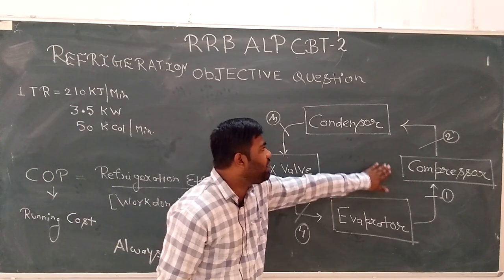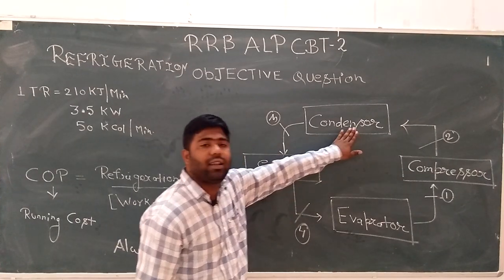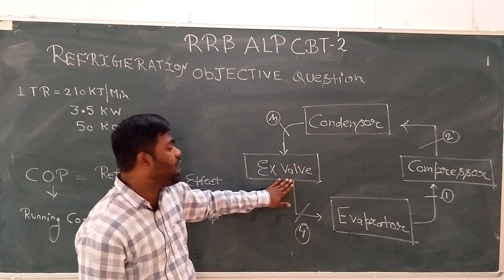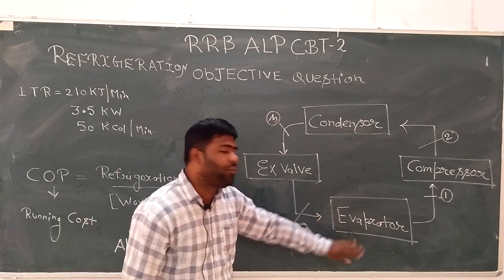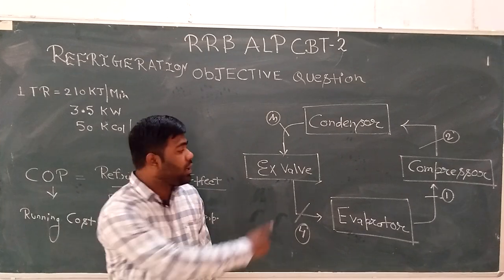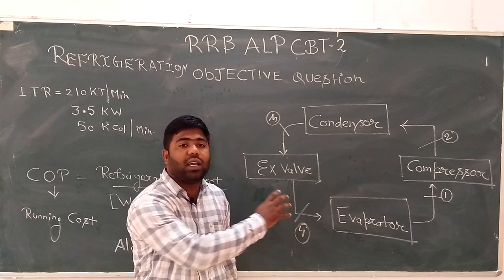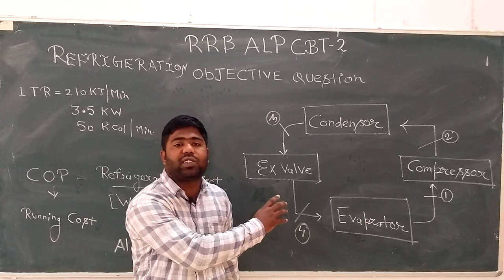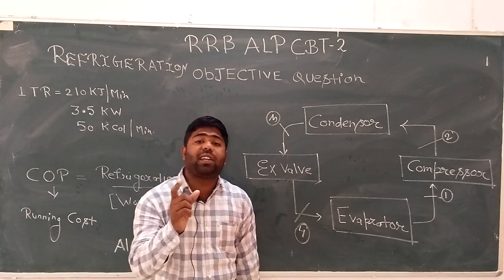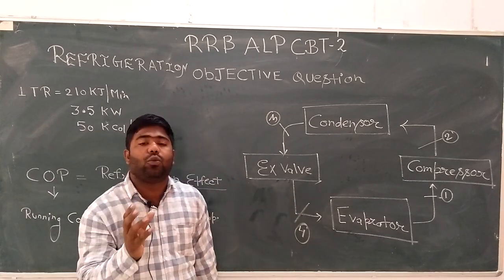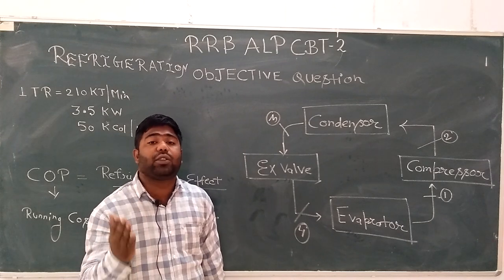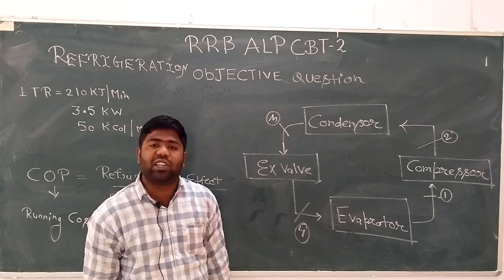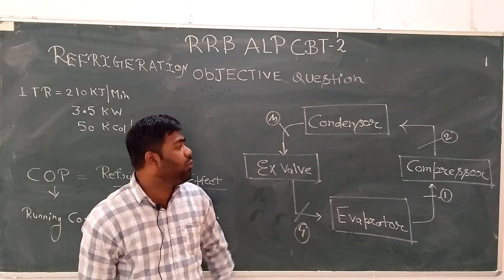One more time: compressor, condenser, expansion valve, evaporator. What does the compressor do? In the evaporator, the vapor refrigerant is compressed by the compressor.